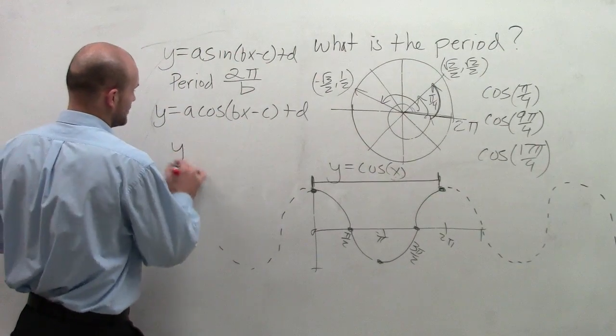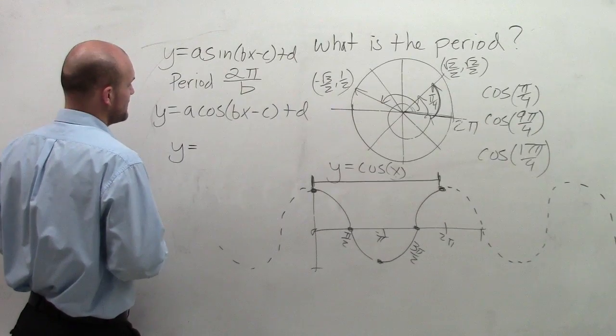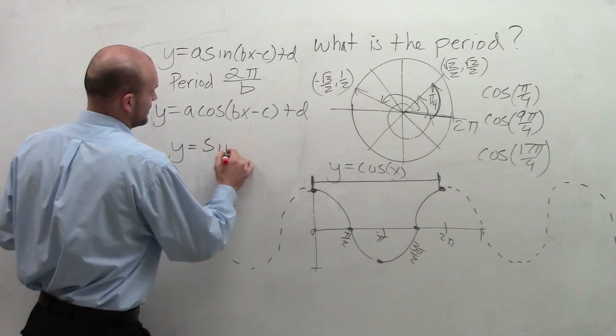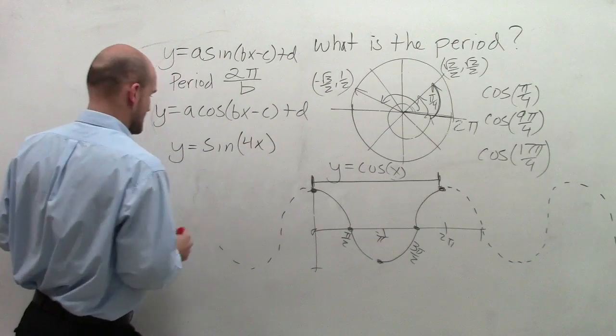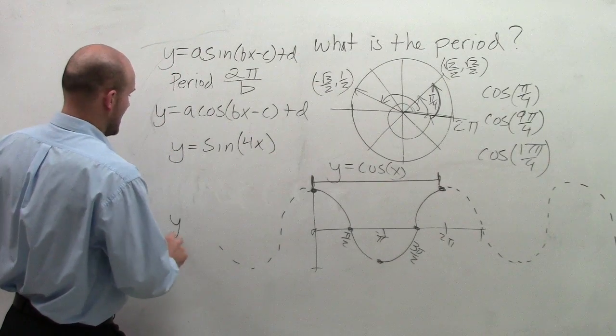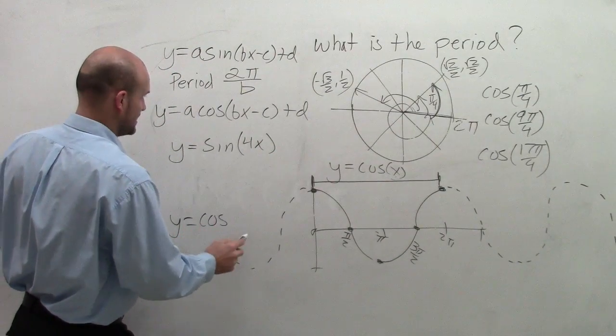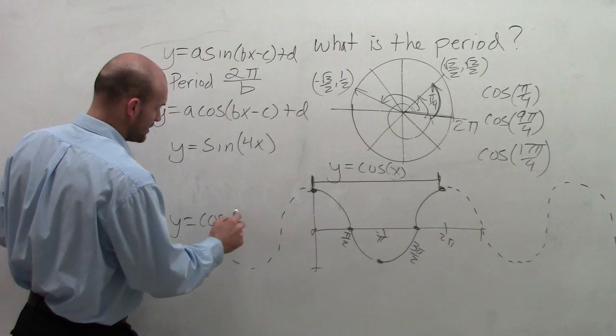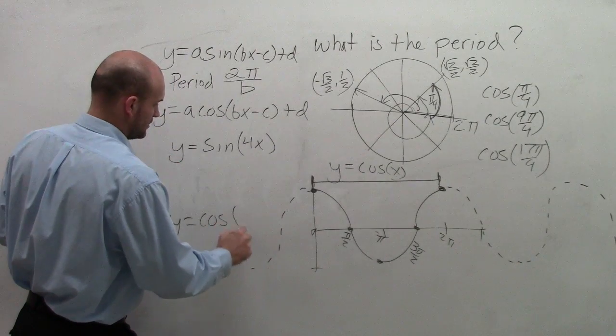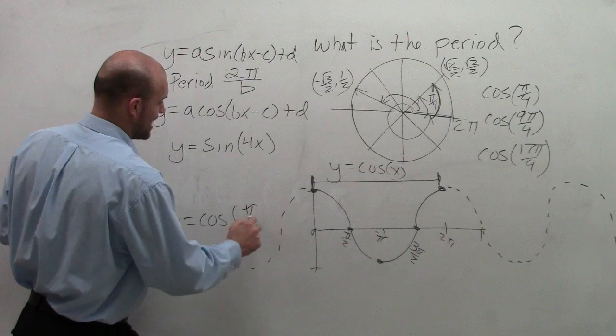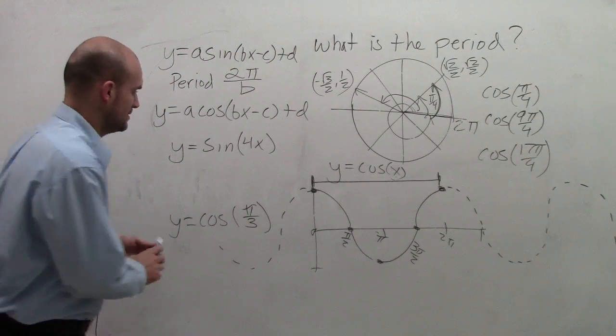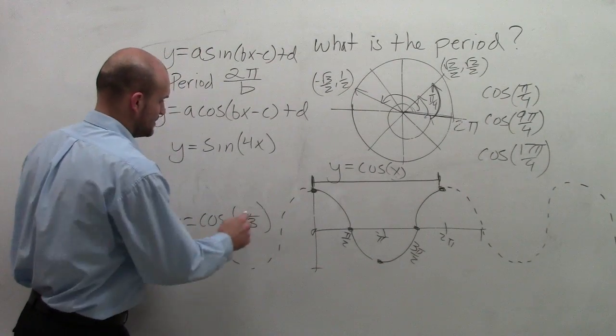So let's just take a look at two functions here. Let's say I have y equals the sine of 4x, and then let's do y equals the cosine of x divided by 3.